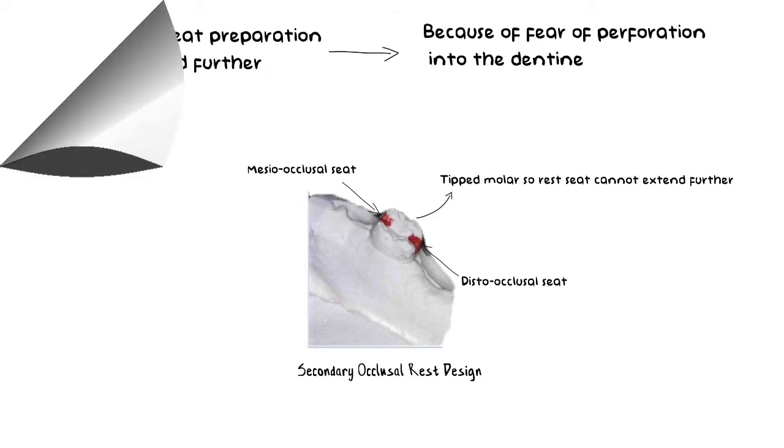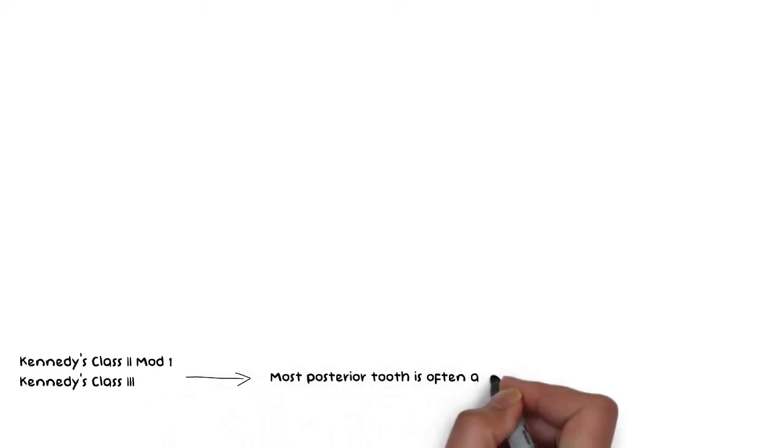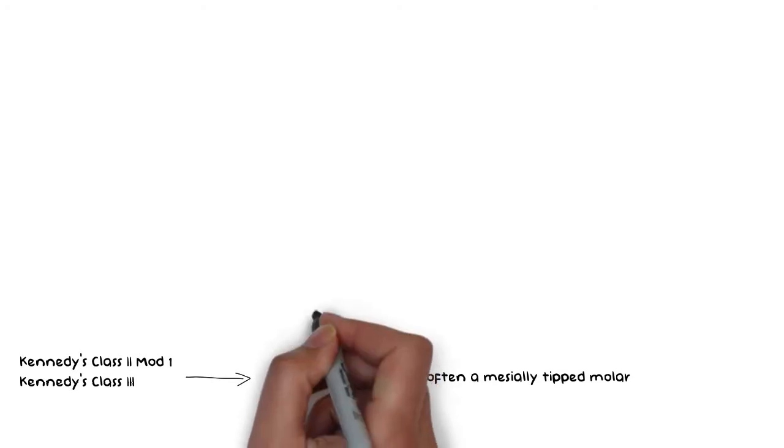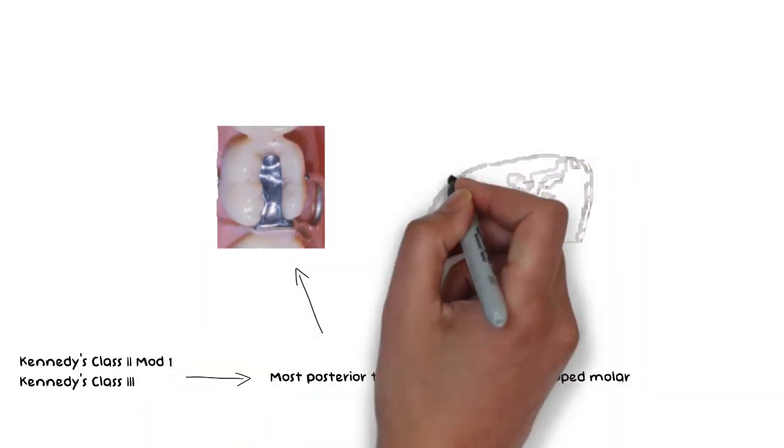Often in Kennedy's class 2 modification 1 and in Kennedy's class 3, the most posterior tooth which is going to be used as an abutment is often a mesially tipped molar. In this situation, designing the occlusal rest which directs the occlusal forces along the long axis and also minimizes the movement of the abutment can be very difficult. In this situation, an extended occlusal rest can be used.